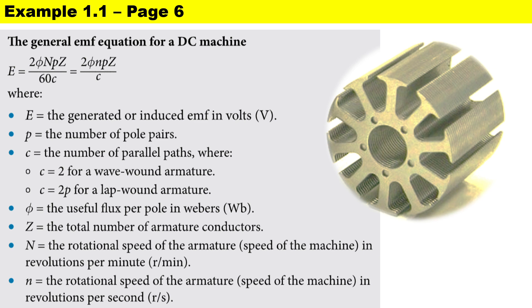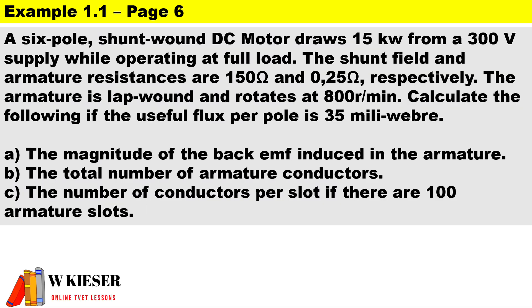Example 1.1 on page 6: A 6-pole shunt wound DC motor draws 15 kilowatts from a 300 volt supply while operating at full load. The shunt field and armature resistances are 150 ohms and 0.25 ohms respectively.